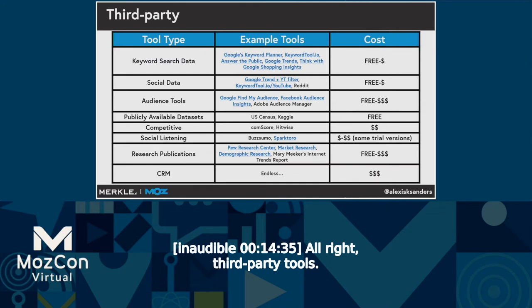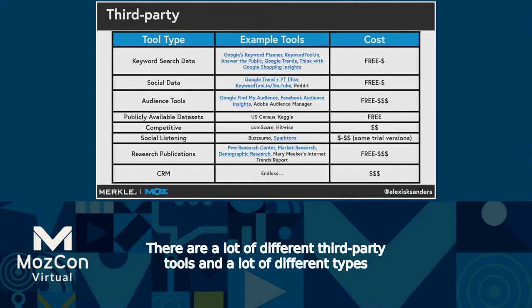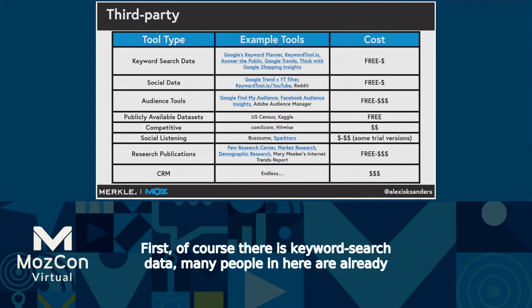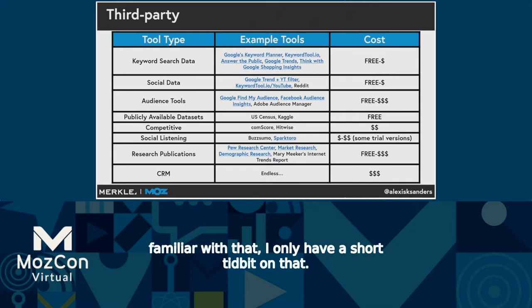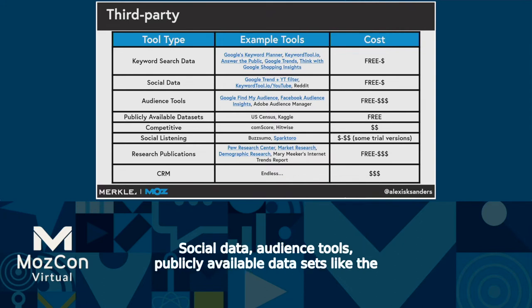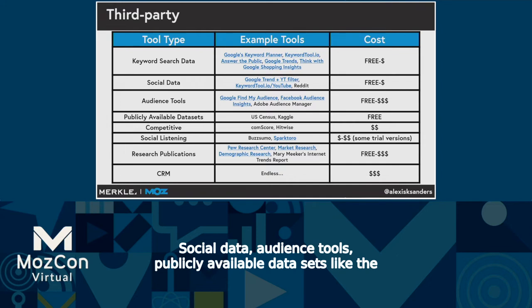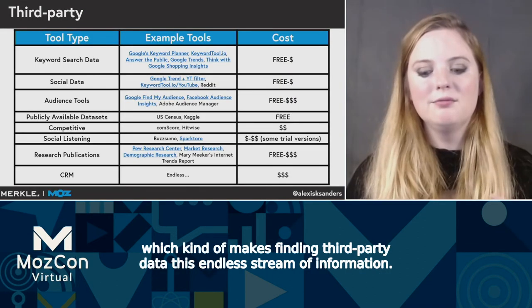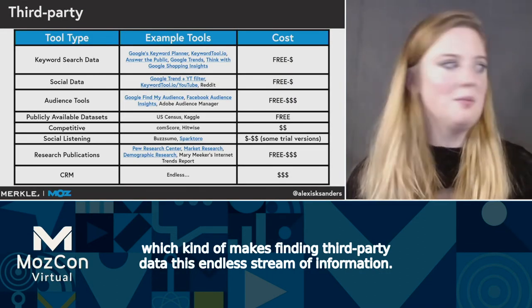Now, third-party tools. There are a lot of different types of third-party tools. First, of course, there is keyword search data — many people here are already familiar with that. There's also social data, audience tools, publicly available data sets like the census or research publications, social listening, competitive tools, as well as CRM — which kind of makes finding third-party data this endless stream of information.